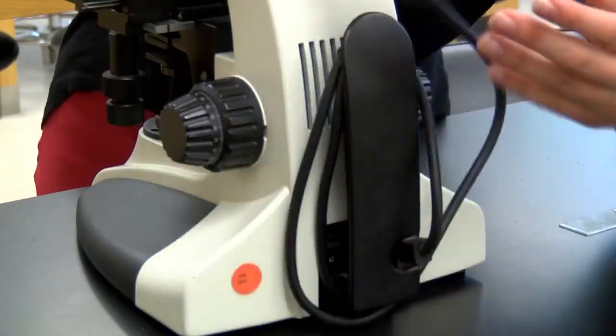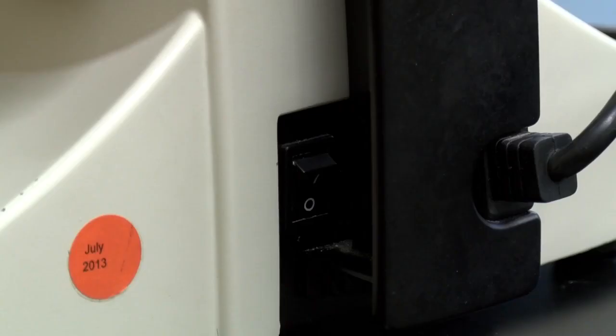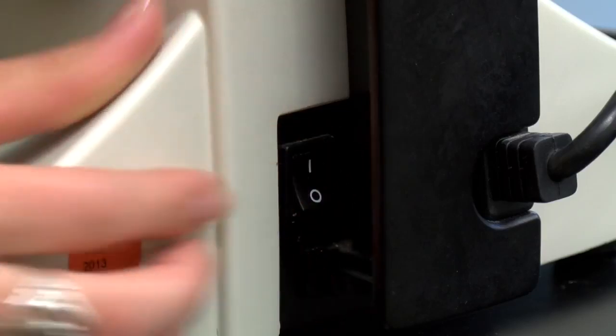Unwind the cord from the back of the microscope and plug it in. The on-off switch is on the back of the scope and may be hard to find if the power cord is still wrapped around the holders.